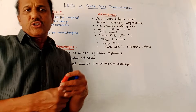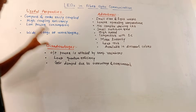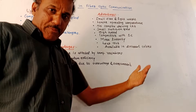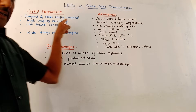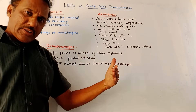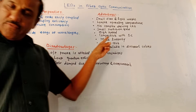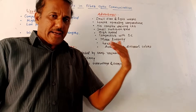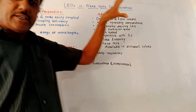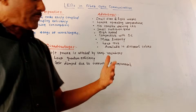There are some useful properties of LED because of which it is applicable in fiber optic communication. LEDs are compact and can be easily coupled to the fiber optic cable. The coupling efficiency is high. It is a low power consumption device and is available in a wide range of wavelengths, so different colors are available. These are the important properties because of which LEDs are used as a light source in fiber optic communication.